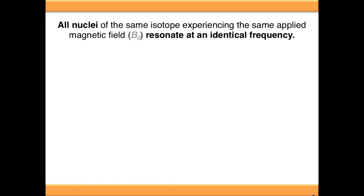In NMR spectroscopy, all nuclei of the same isotope which experience the same applied field, or B0, resonate at an identical frequency. So you might think that this wouldn't give you very much information about the molecule — all it would tell you is that your molecule has that nucleus in it, because you'd get a single peak at the resonance frequency.